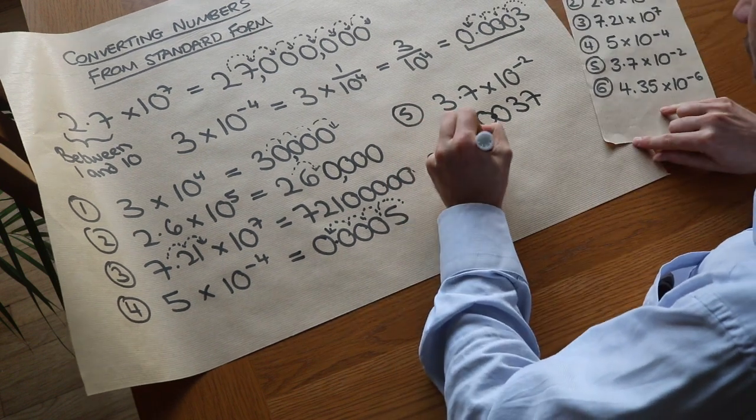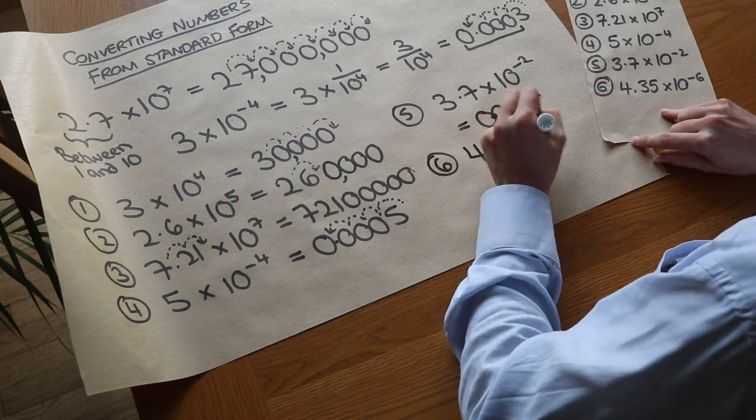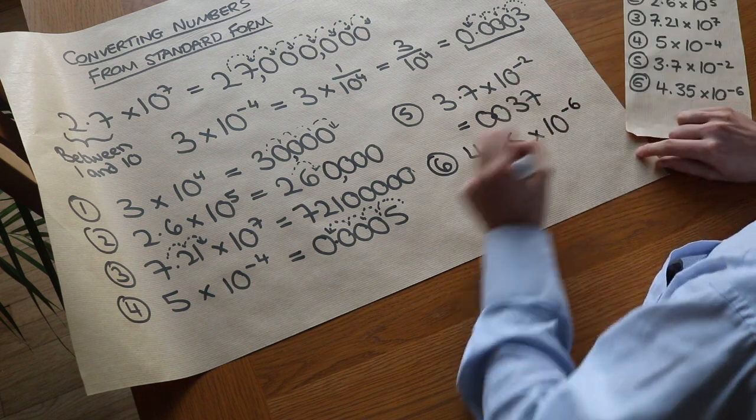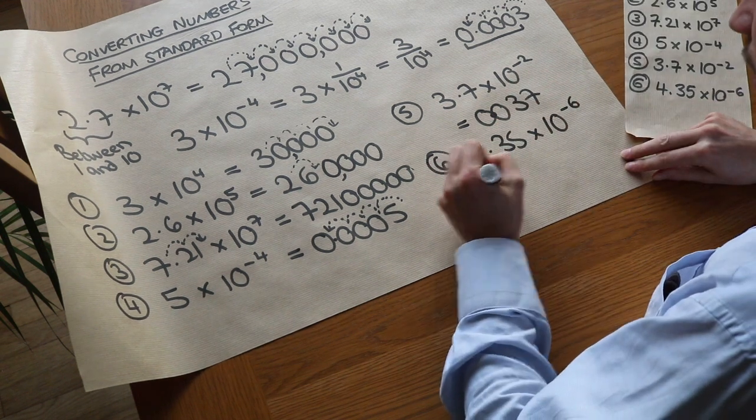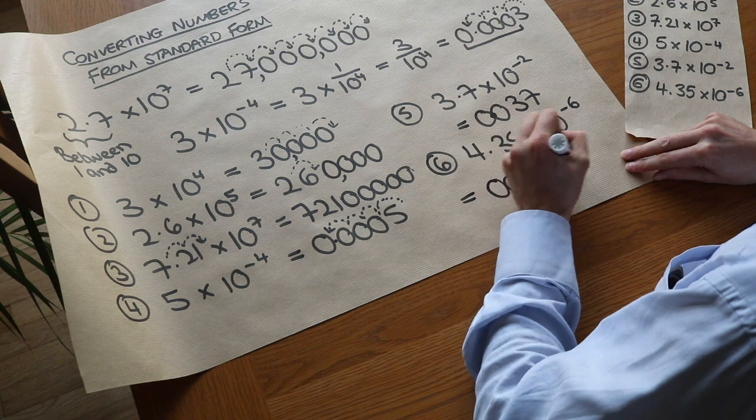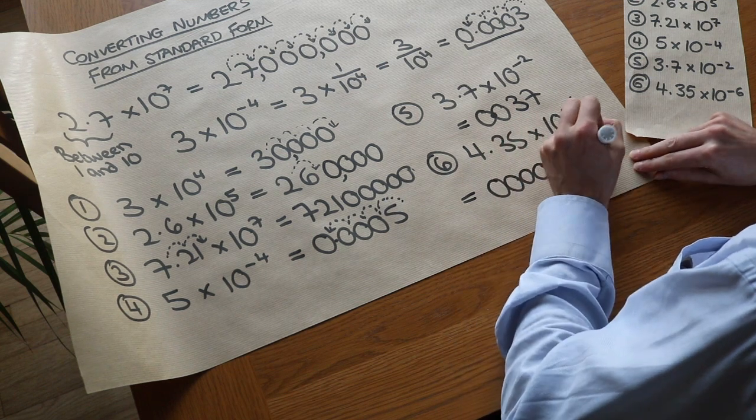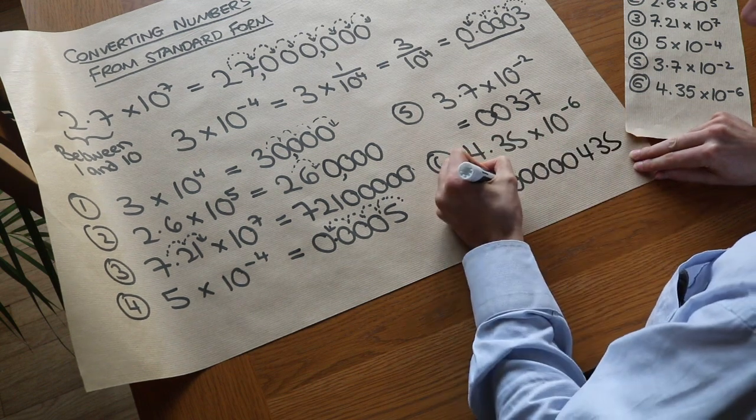And then the final one, question six: 4.35 times 10 to the minus 6. So we need six zeros on the front: 1, 2, 3, 4, 5, 6, then 4, 3, 5, and then we put the decimal point here.